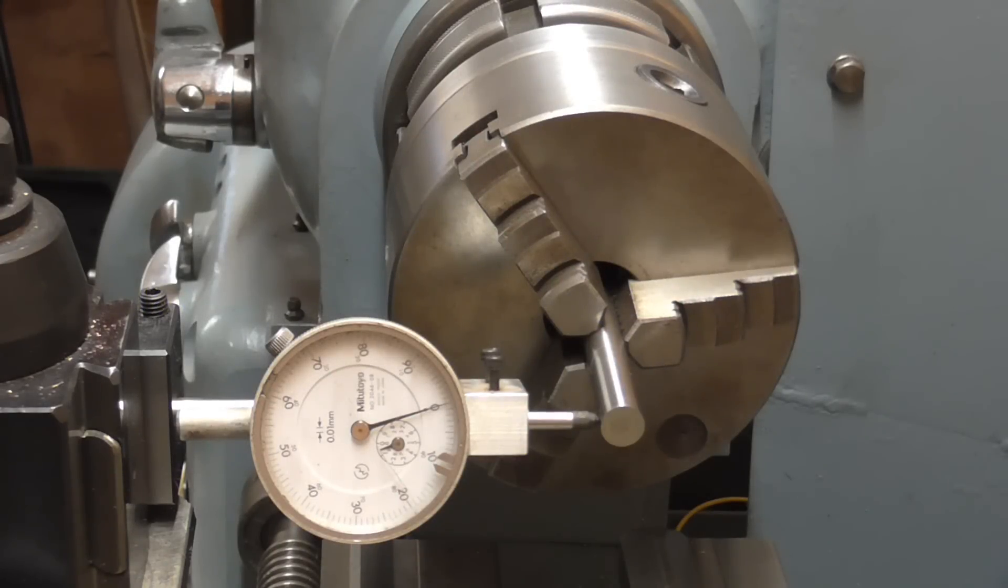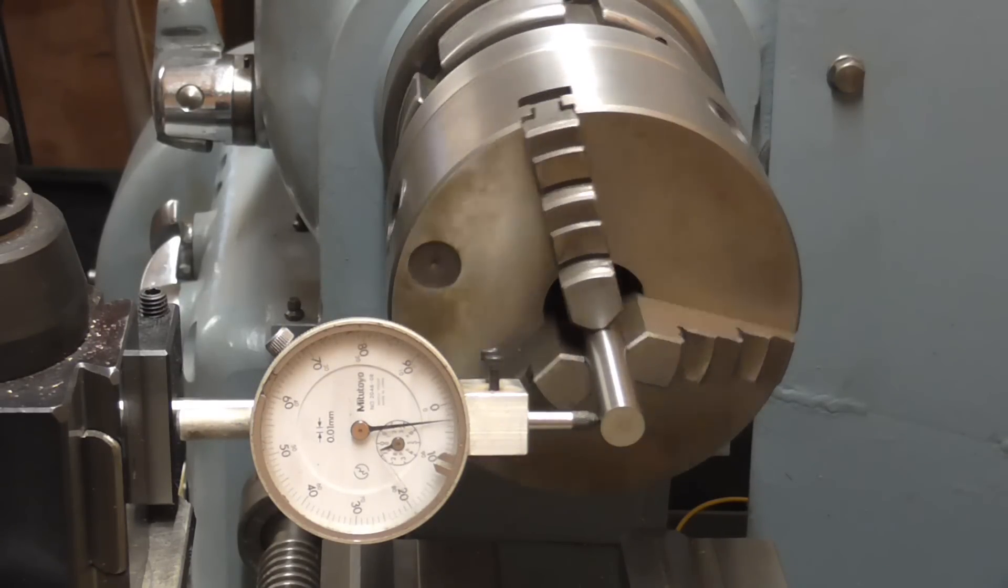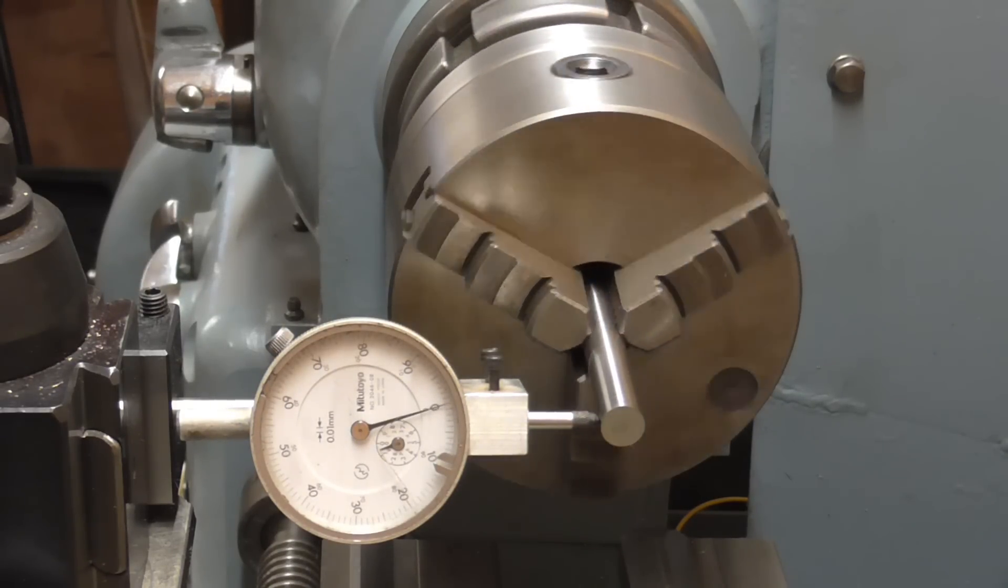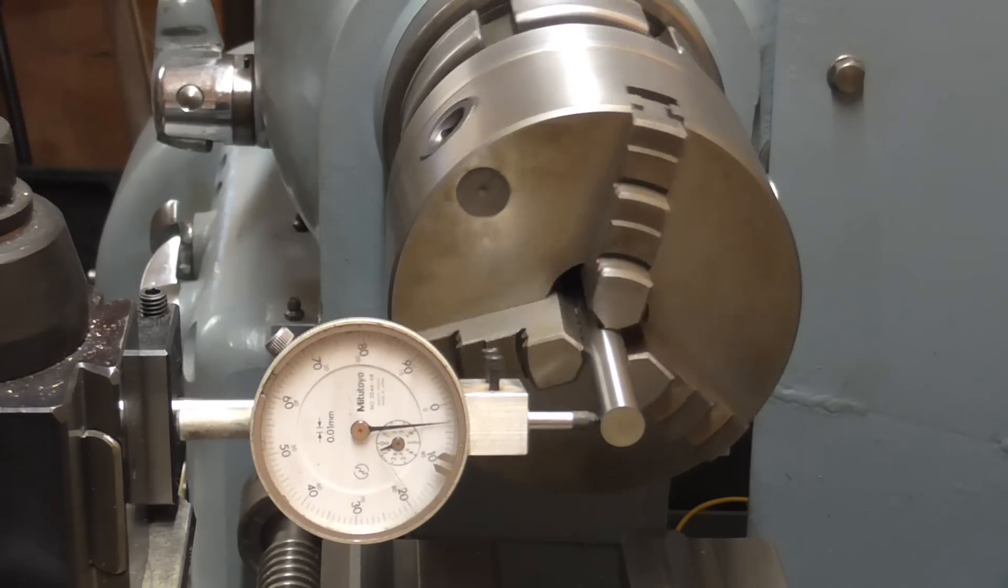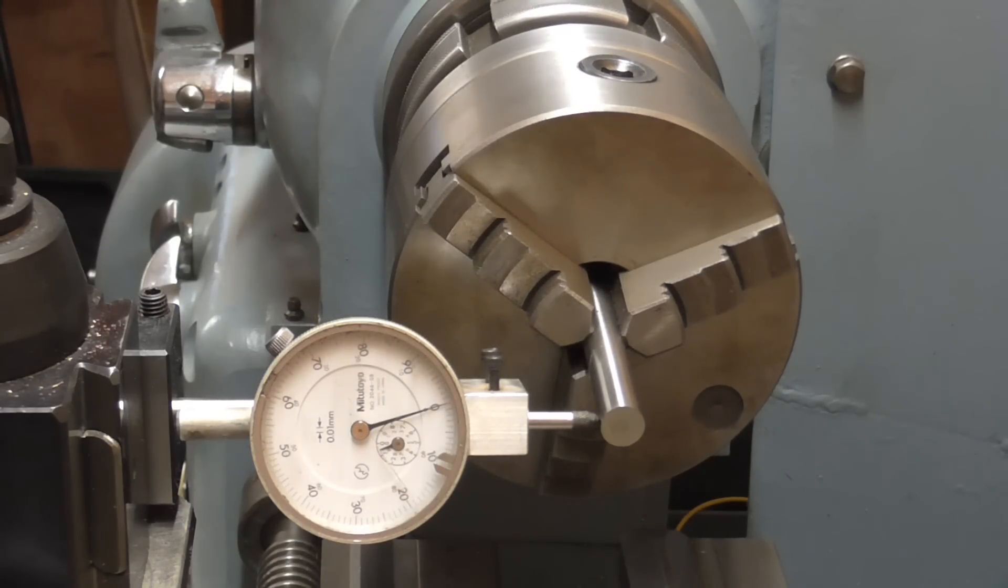I'm just doing a little run-out check of the three-jaw chuck on my Harrison L5. This was a cheap Chinese chuck. I think I paid all of about £40 for it and got a Mitutoyo hundredths millimetre clock on there. You can see there I've got about just over three hundredths of a millimetre run-out, one and a half thou.